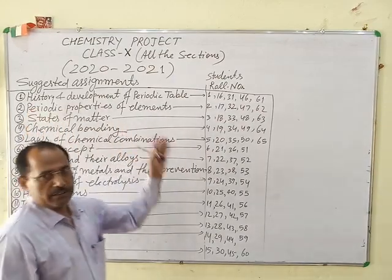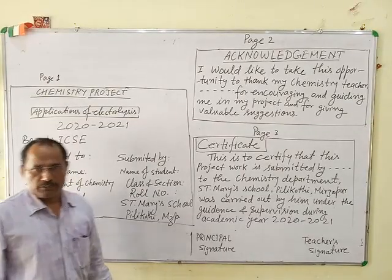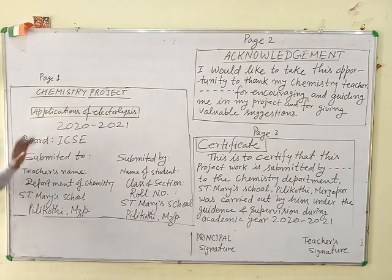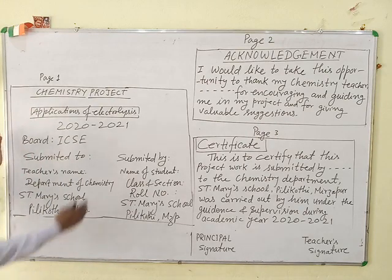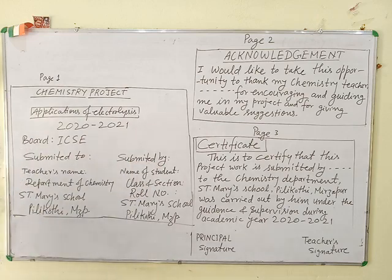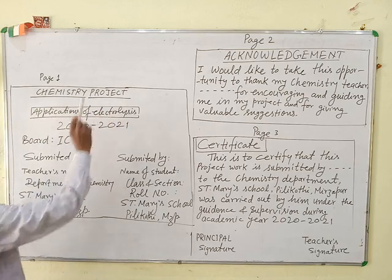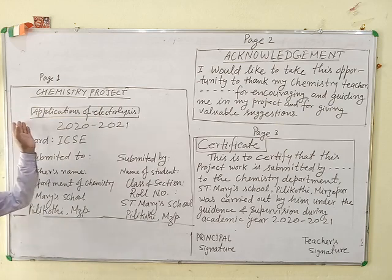Now, how to make your project file. On the first page, write 'Chemistry Project' in bold letters, then just below it write the title of your assignment.